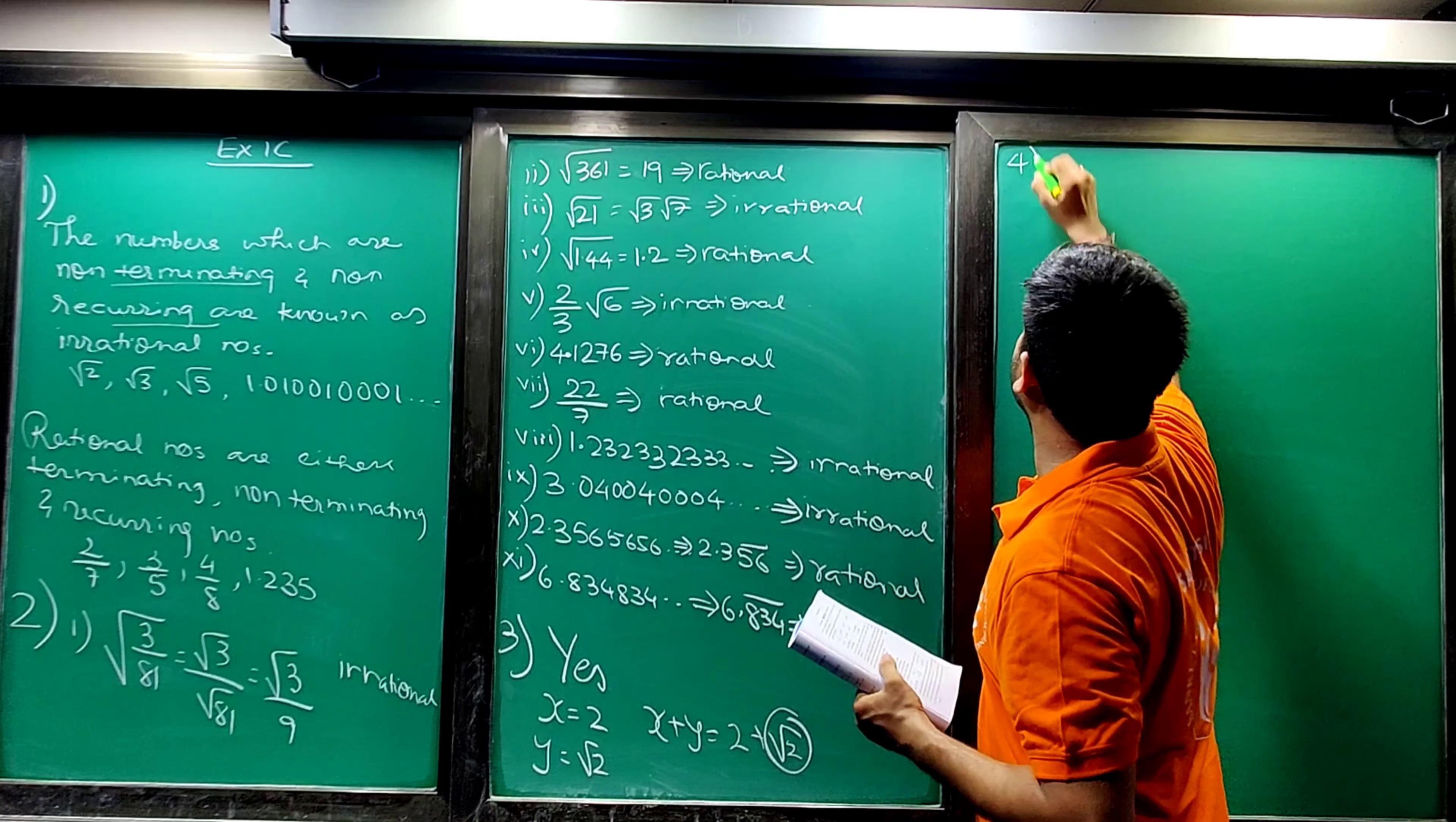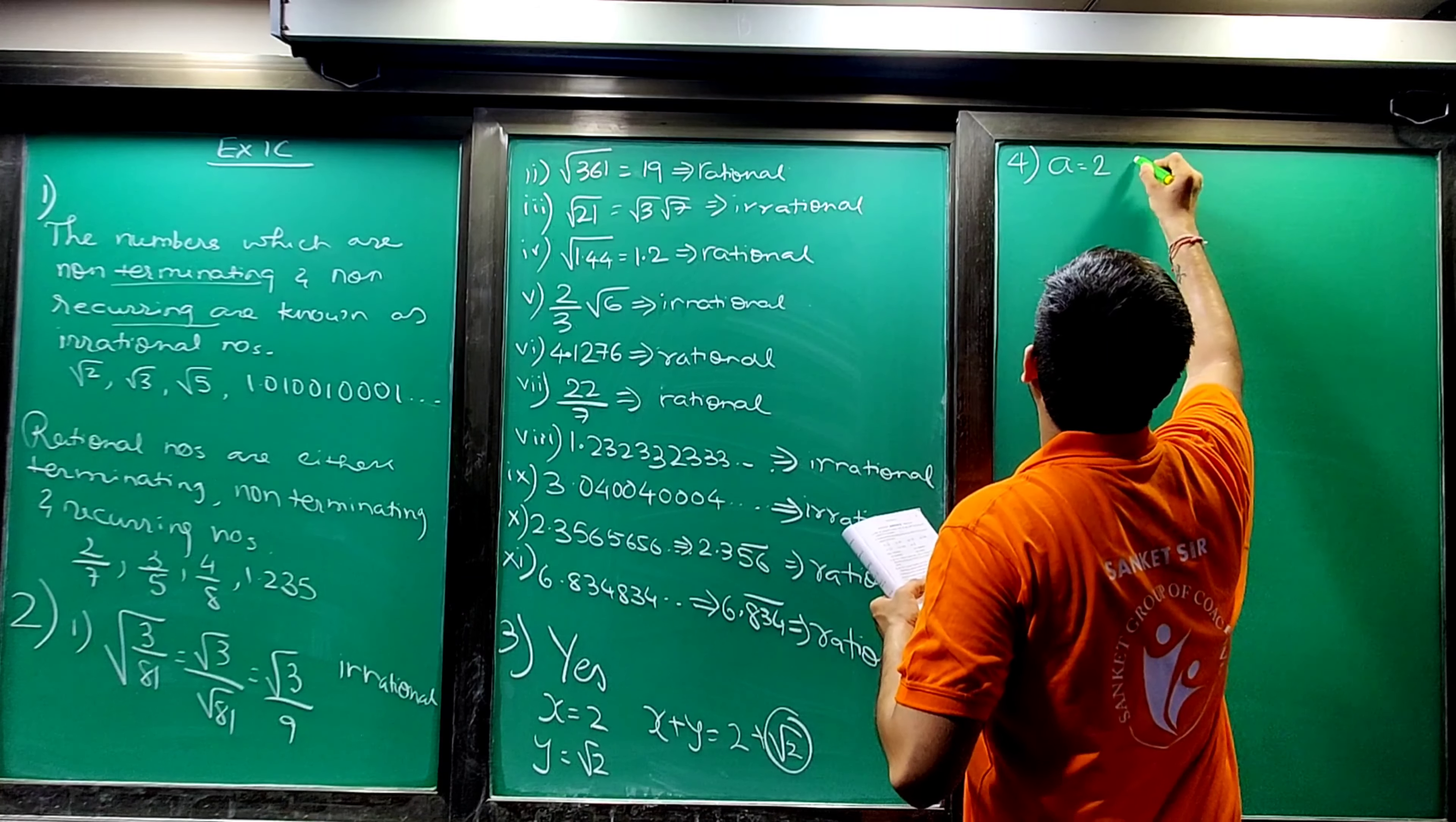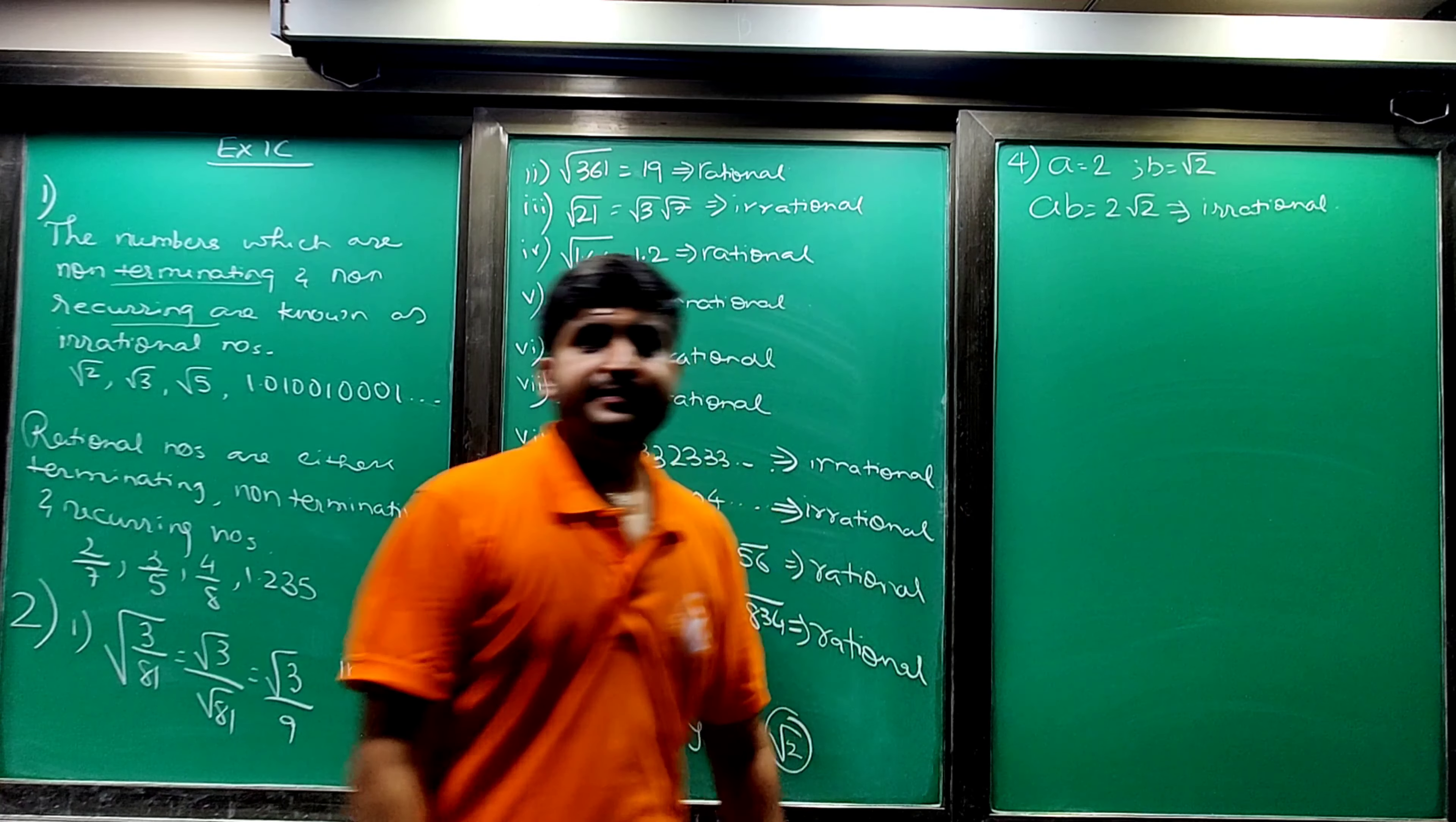Major sum number fourth: let a be a rational number and b be the irrational number. Is ab necessarily an irrational number? Justify your answer with an example. Let a is equal to 2 and b is equal to root 2. This is 2 into root 2. One is rational and other is irrational. So product of these two will be 2 root 2, which is always an irrational number.